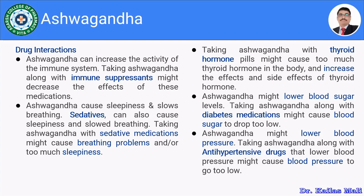The second drug interaction is related to sedatives. Ashwagandha causes sleepiness and slows breathing; sedatives also cause sleepiness and slow breathing. Taking Ashwagandha with sedative medications might cause breathing problems or excessive sleepiness. The third interaction is with thyroid hormones. Taking Ashwagandha with thyroid hormone pills might cause too much thyroid hormone in the body, increasing the effects and side effects of thyroid hormone.